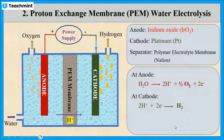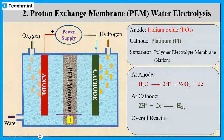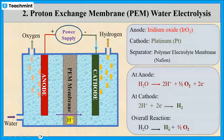This is the reaction. At cathode, the recombination of protons and electrons takes place along with the liberation of hydrogen gas. The overall reaction will be water is converted into hydrogen gas and oxygen gas.